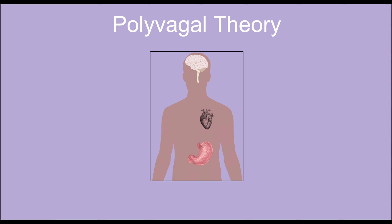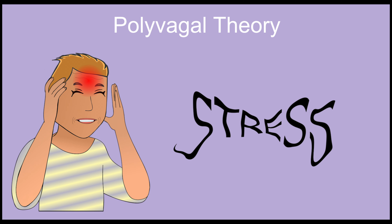The sole purpose of the autonomic nervous system is survival. It connects our brain, heart, and belly organs. The polyvagal theory focuses on social connection and communication, and also plays a significant role in understanding trauma in our own lives and the lives of others.